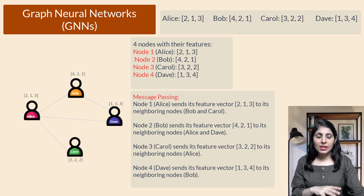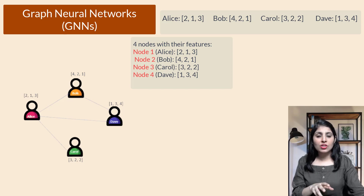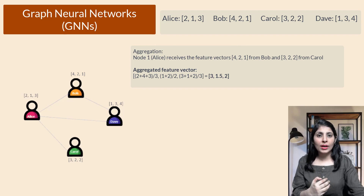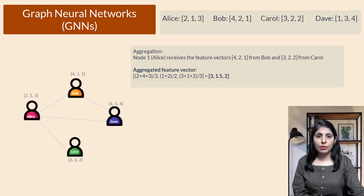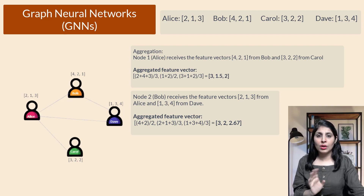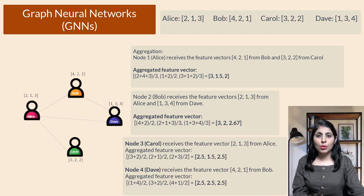Next is aggregation. Once nodes have sent their features, aggregation is performed. Node one Alice receives feature vectors from Bob and Carol, and the aggregated feature vector is computed from those. Node two Bob receives feature vectors from Alice and Dave, producing its aggregated vector. Similarly, node three Carol and node four Dave each produce their own aggregated feature vectors based on what they received.